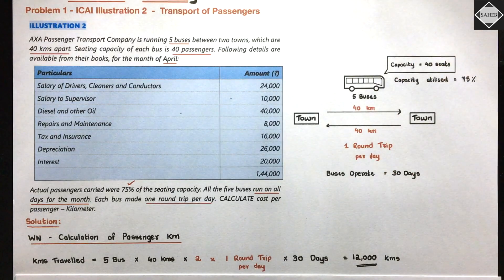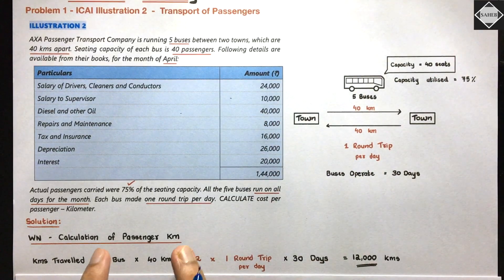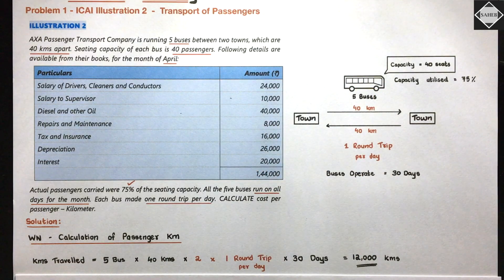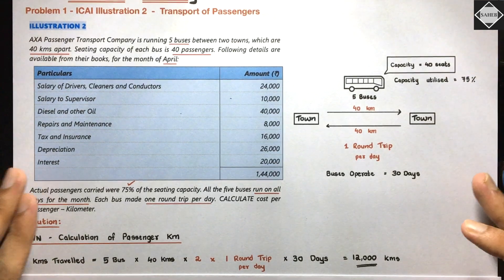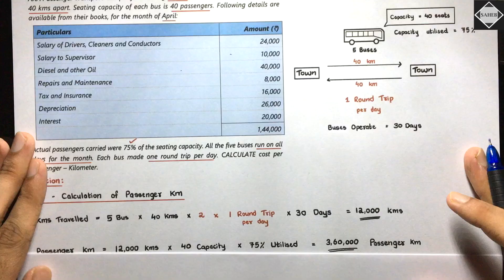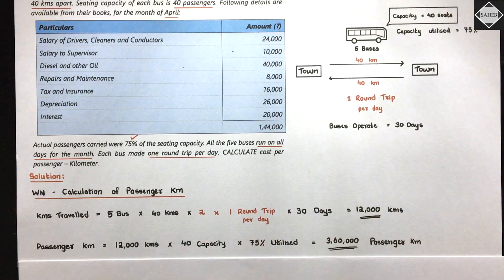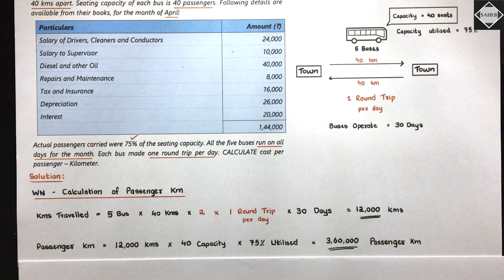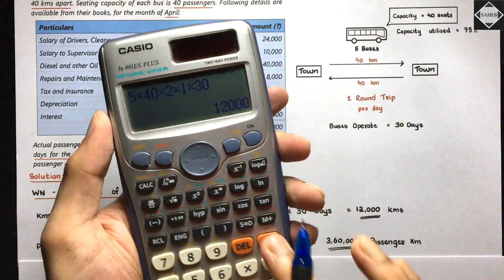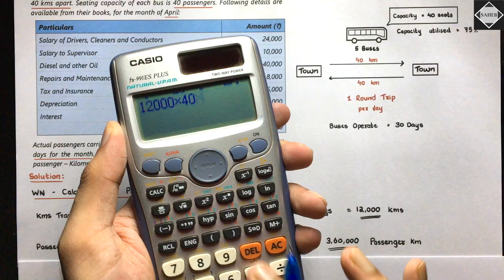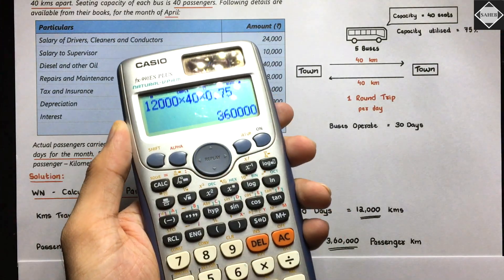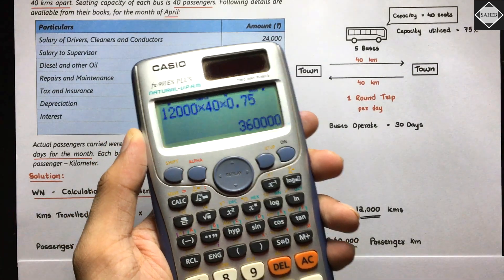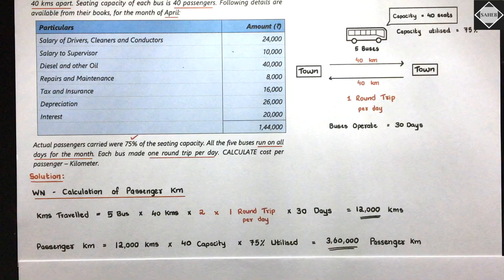Now we add the passenger element to get passenger kilometers. The bus capacity is 40 seats and on average 75% is utilized. So passenger kilometers = 12,000 × 40 × 75% = 360,000 passenger kilometers for the month of April. These are the total passenger kilometers - our denominator.